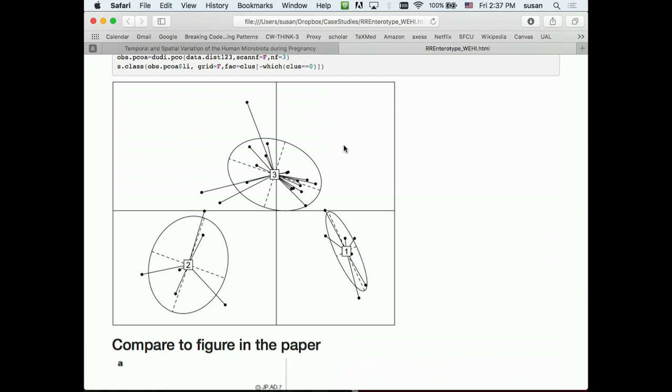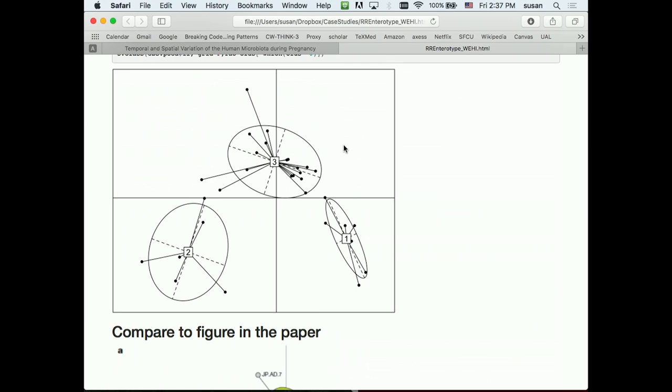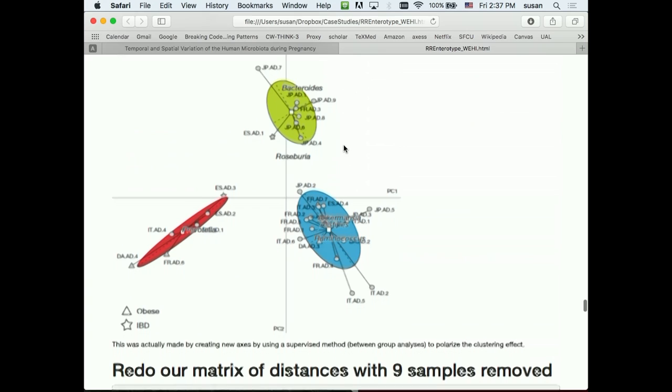And if we go back to what they actually found, and we choose the same distance, the same three clusters, this is what we found. And so we found clusters which were much broader than the clusters as they were published in the paper.